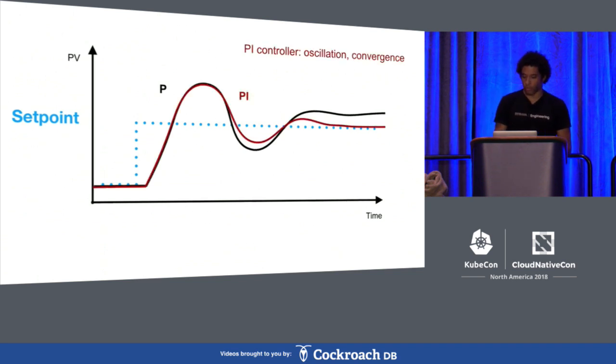So to at least account for the convergence problem, we can add an integral component. And that looks at the accumulation of error over time and will eventually take care of any steady-state error in a system. But we still want to take care of this oscillation as well.